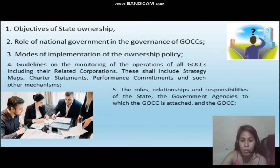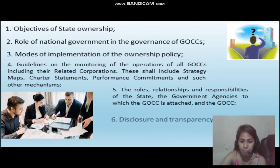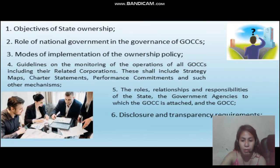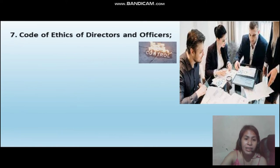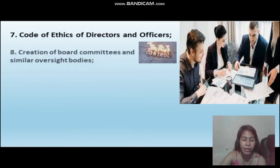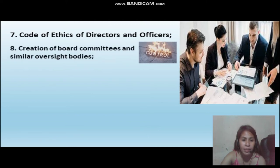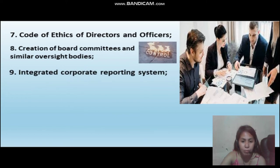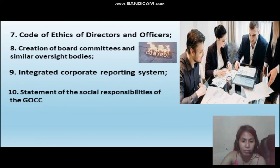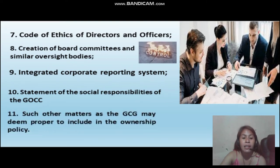The fifth is the rules, relationships, and responsibilities of the State, the government agencies to which the GOCC is attached, and the GOCC. The sixth is the disclosure and transparency requirements. The seventh is the code of ethics of directors and officers. The eighth is the creation of board committees and similar oversight bodies. The ninth is the integrated corporate reporting system, and the statement of the social responsibilities of the GOCC. And the last is such other matters as the GCG may deem proper to include.